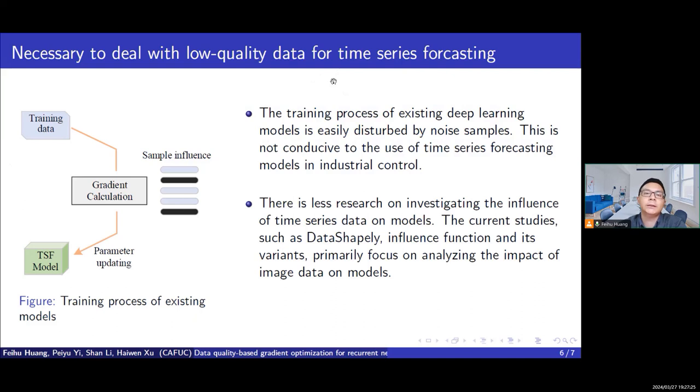The first reason is the training process of deep learning models is easily disturbed by noisy samples, because they assign each sample in a training batch the same weight. The second reason is there is less research on investigating the influence of time-series data on models.